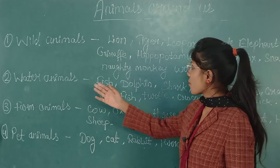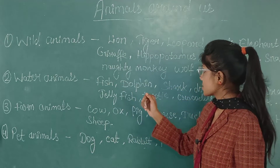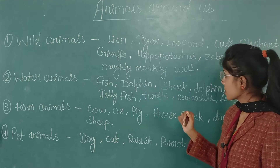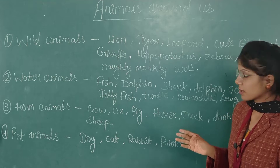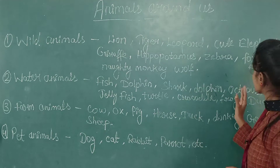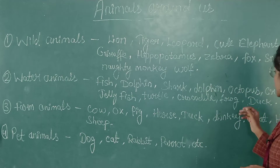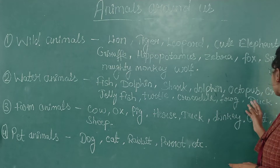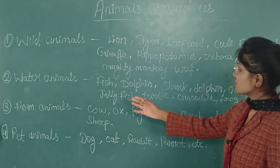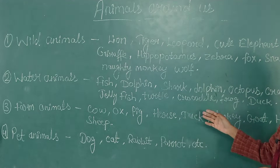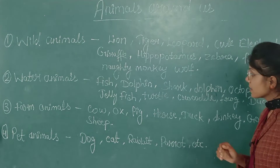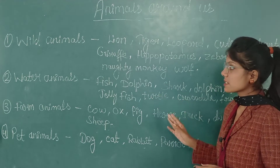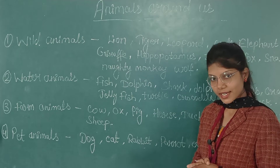The names of water animals are: fish, dolphin, shark with sharp teeth, octopus — it has many legs — crab, jellyfish, turtle, crocodile, frog, and duck. These all animals live in water.